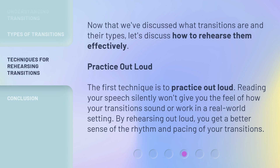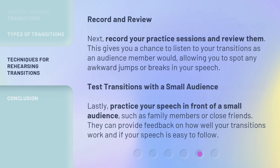Now that we've discussed what transitions are and their types, let's discuss how to rehearse them effectively. The first technique is to practice out loud. Reading your speech silently won't give you the feel of how your transitions sound or work in a real-world setting. By rehearsing out loud, you get a better sense of the rhythm and pacing of your transitions. Next, record your practice sessions and review them. This gives you a chance to listen to your transitions as an audience member would, allowing you to spot any awkward jumps or breaks in your speech.